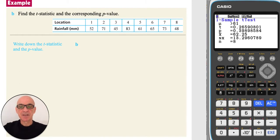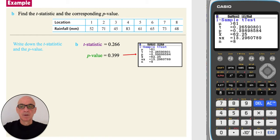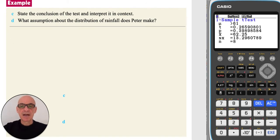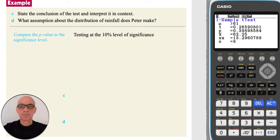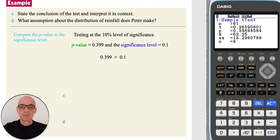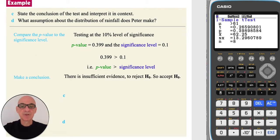Write down the value of the test statistic and the p-value, correct to three significant figures. To make a conclusion, as the critical value was not given in the question, we compare the p-value to the significance level, which was 10%, or 0.1. Since 0.399 is greater than 0.1 — i.e., since the p-value is greater than the significance level — we conclude that there is insufficient evidence to reject the null hypothesis, so we accept it.